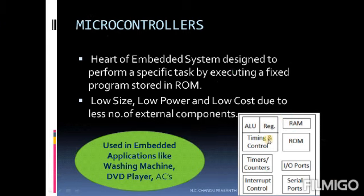This is the block diagram of a microcontroller. It consists of an ALU, registers, and timing controller — which is essentially the microprocessor. It also consists of RAM, ROM, timers, IO ports, serial ports, and an interrupt controller. All these are embedded in a single IC.